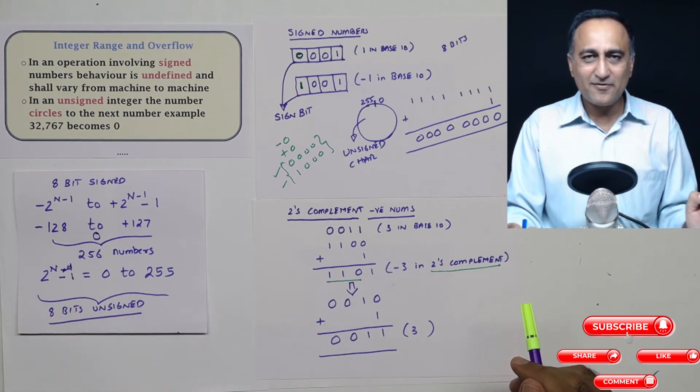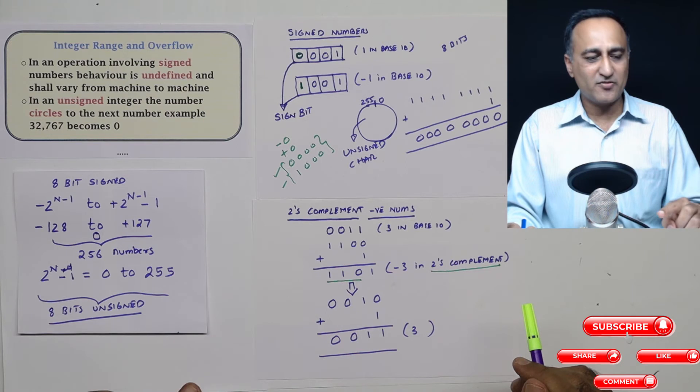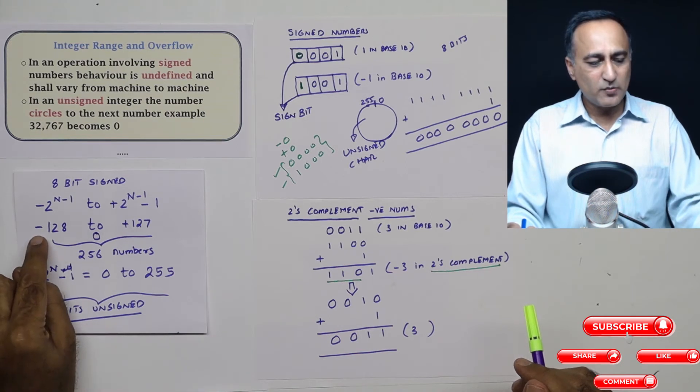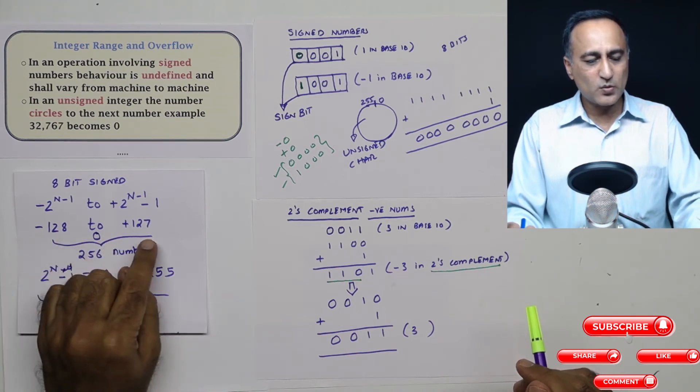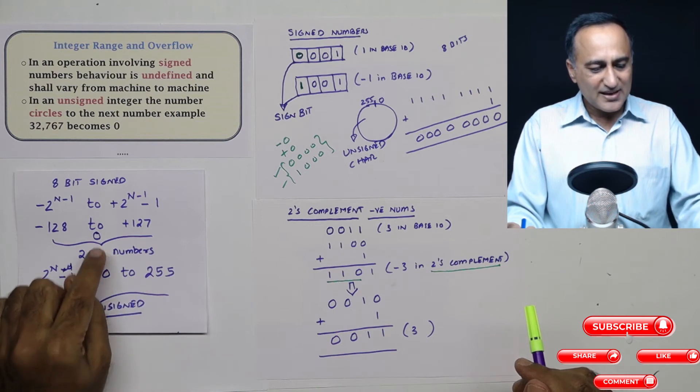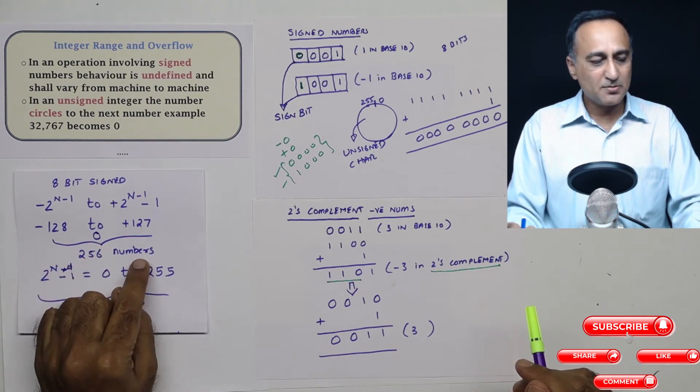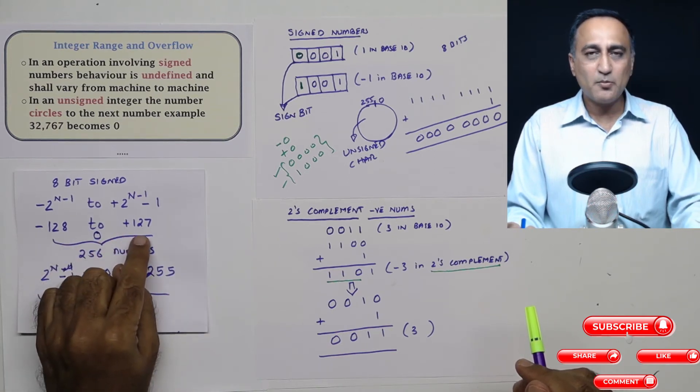But suppose that eight bits itself I'm using to store both positive and negative numbers, then it can store only between minus 128 to plus 127. In both cases, it's storing 256 numbers, but here it is storing both negative and positive.